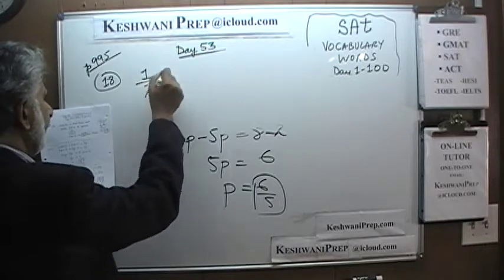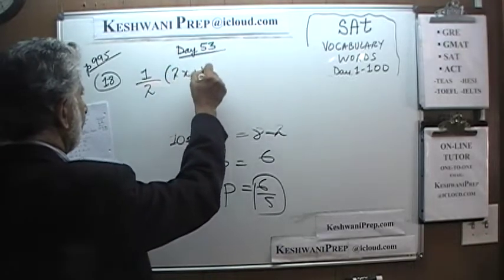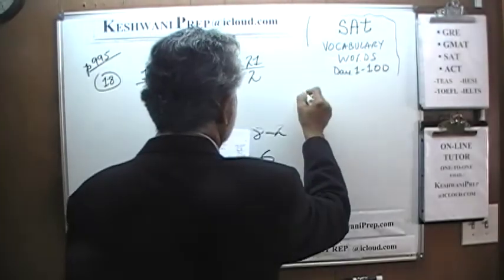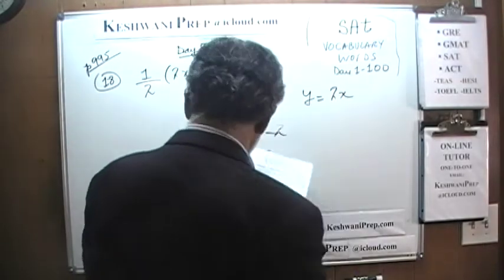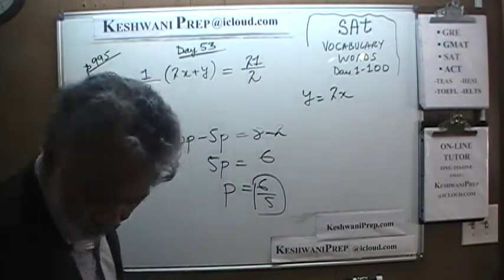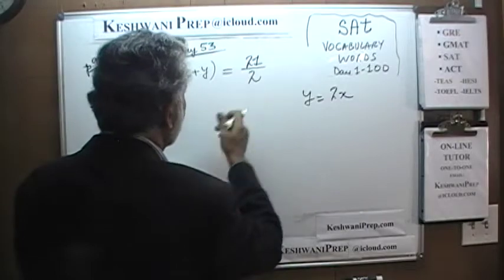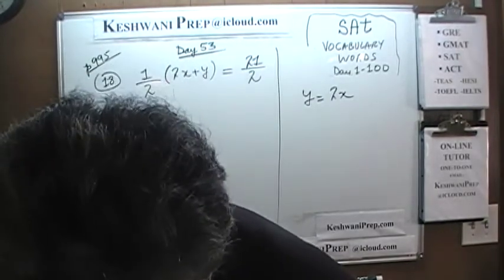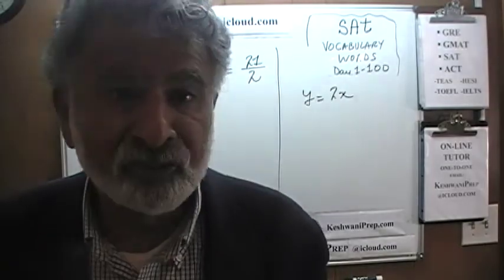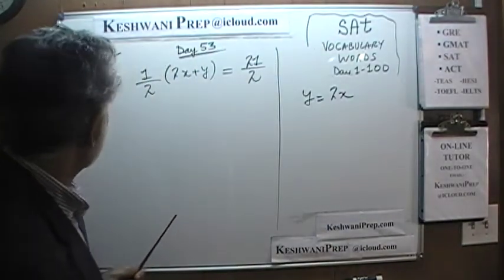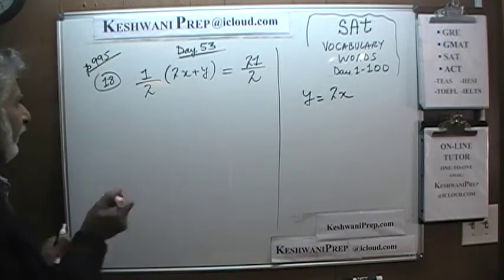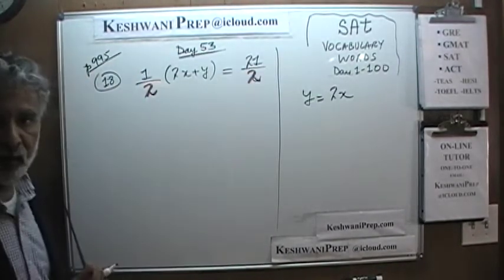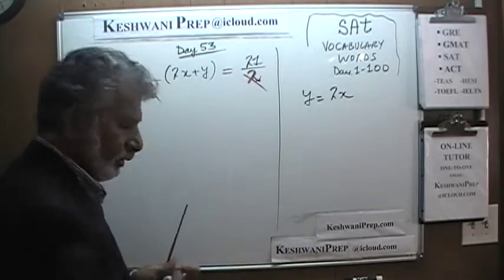Number 18 says: one-half times (2x plus y) is equal to 21 over 2 — that's the first equation. The second equation they give us is y equals 2x. The question simply is: what's the x-coordinate of the solution? Well, first thing we notice is that we have a 2 in the denominator on both sides, so if we multiply both sides of the equation by 2 we can get rid of it.